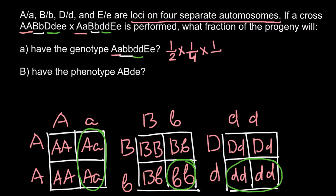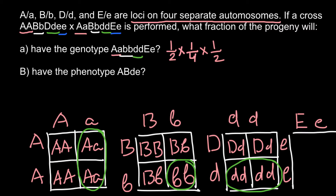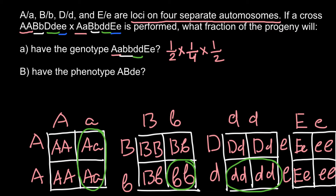Now let's look at the last gene E. Parent one is homozygous recessive and parent two is heterozygous. We build a Punnett square: Ee, ee, Ee, ee. The probability for progeny to be heterozygous for gene E would be 50%, or one half. So we multiply by one half.